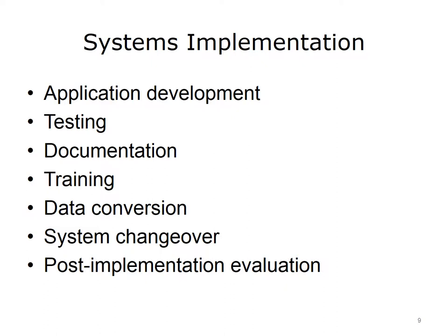Accurate documentation describes the information system and helps users, managers, and IT staff by increasing the usability of the system, reducing errors, and improving productivity. The success of the system's development effort depends on whether people understand the system and know how to use it effectively. No system can be successful without proper training for users, managers, and IT staff members. Training can be provided by vendors, outside training firms, or IT staff and other in-house resources.